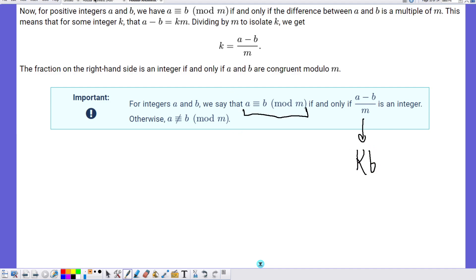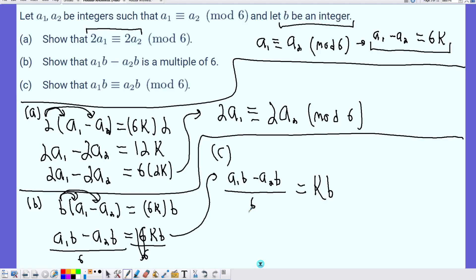KB is an integer. And since we have that the difference of our two values over 6 is an integer, that shows absolutely that A1B is congruent to A2B mod 6. And that completes the problem for us.